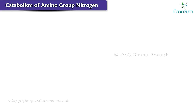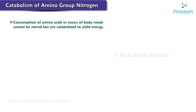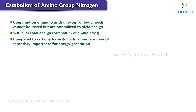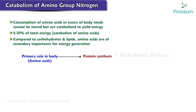Now let's go over the catabolism of amino group nitrogen. Consumption of amino acids in excess of body needs cannot be stored but are catabolized to yield energy. 5 to 10 percent of the total energy requirement of the body comes from the catabolism of amino acids. Compared to carbohydrates and lipids, amino acids are of secondary importance for energy generation, as their primary role is in body protein synthesis and the formation of special products such as amines and porphyrins.